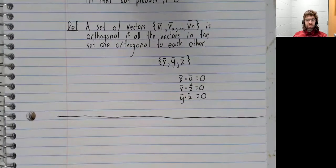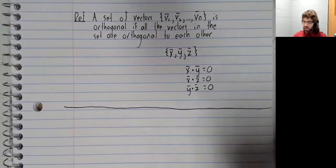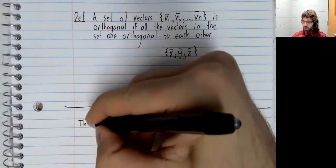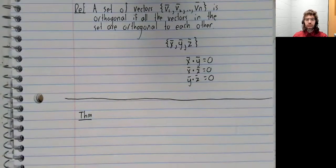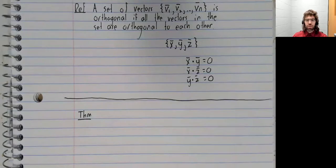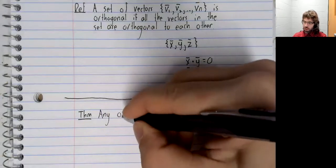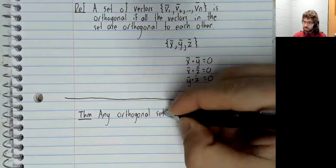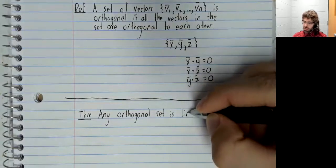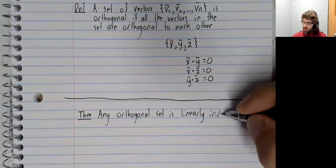Orthogonal sets are nice. They have nice properties. And let's state one of those properties right off the bat as a theorem. I won't prove this here. There's a proof in the notes if you're interested, but any orthogonal set is linearly independent.